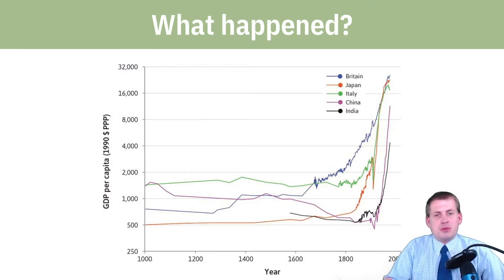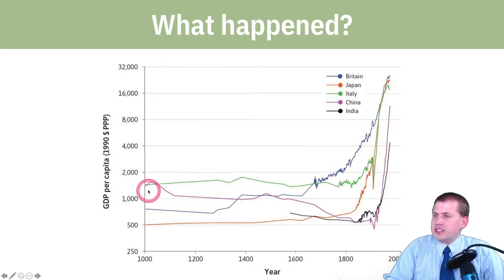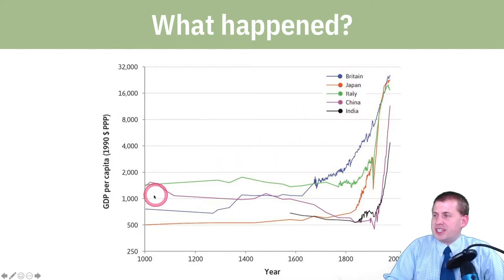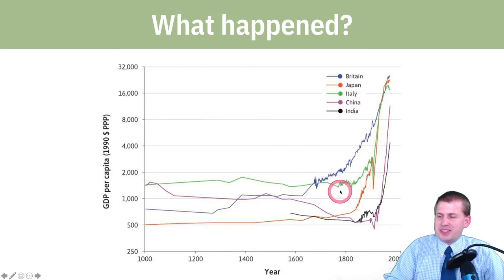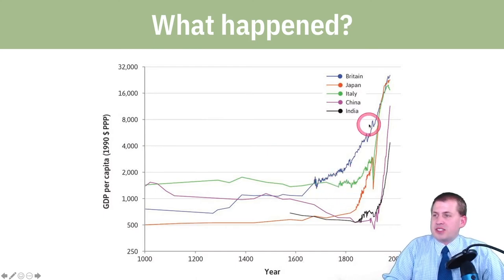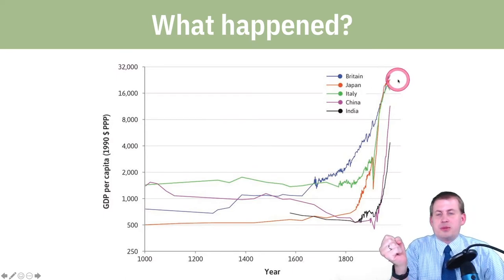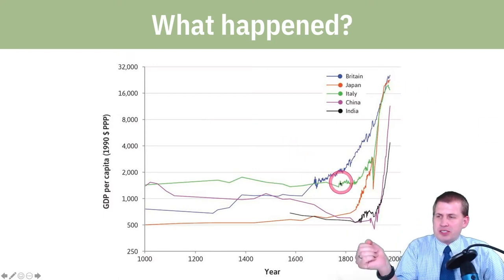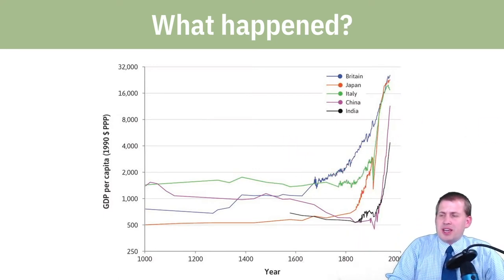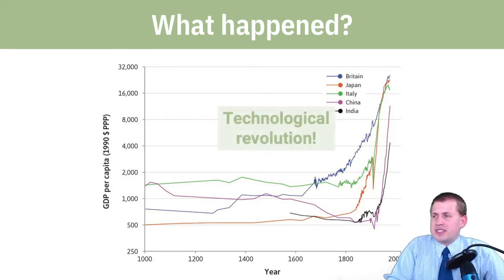The graph shows that countries and regions like Britain, Japan, Italy, China, and India were relatively stagnant from around 1000 up until about 1600 to 1700, and then there was a massive explosion in GDP per capita. For whatever mysterious reason, Britain started having wildly higher standards of living, and then other countries and areas started following suit. The main reason, according to the CORE reading, was the technological revolution.